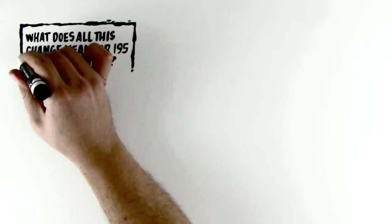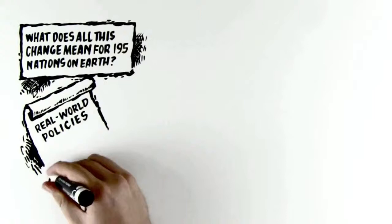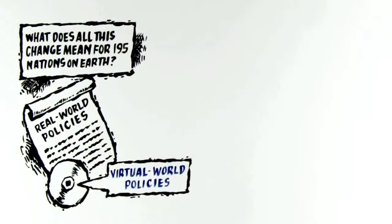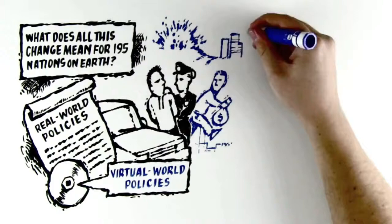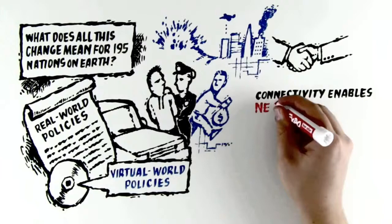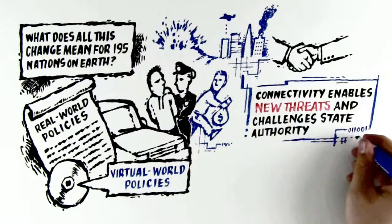What does all this change mean for the 195 nations on Earth? They will have to practice two versions of their domestic and foreign policies: one for the physical, real world, and one for the virtual world that exists online. These policies will appear contradictory at times. Governments might crack down in one realm while allowing certain behavior in another. They may go to war in cyberspace but maintain the peace in the physical world. But for states, they will represent attempts to deal with the new threats and challenges to their authority that connectivity enables.